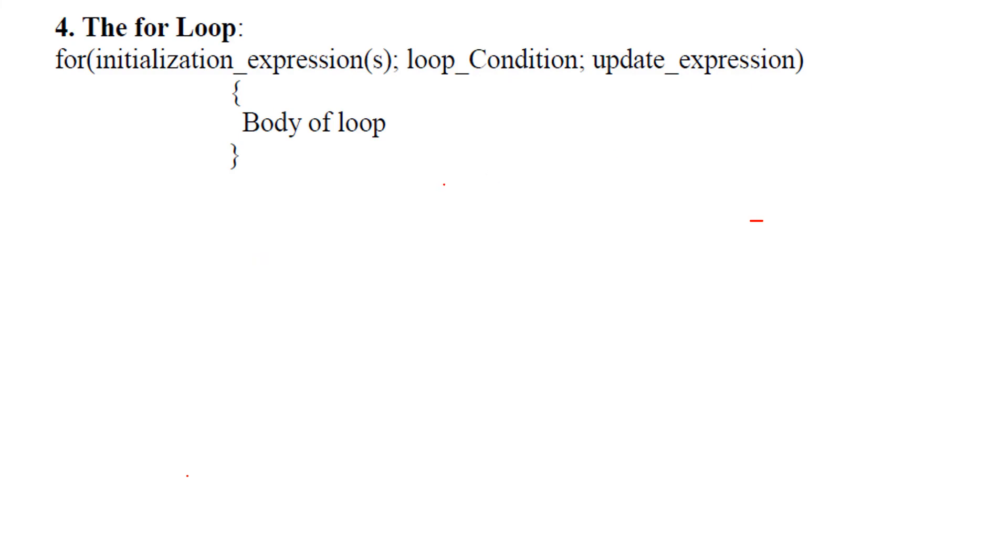Now the for loop. This for loop is a very elegant loop. The reason is that the initialization, the condition where the loop is going to come out, and the update expression that is the increment and decrement, you will find it in one line. This is the entry control loop and all the content, that is the statements, are written in these braces.